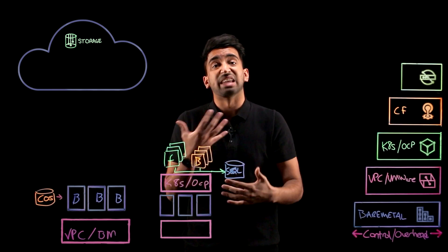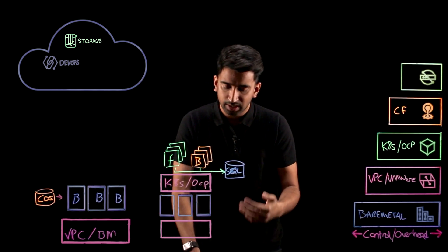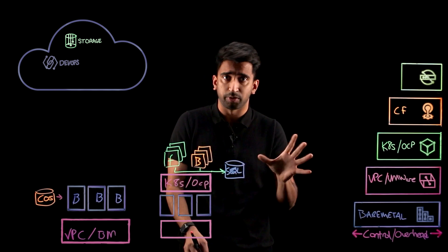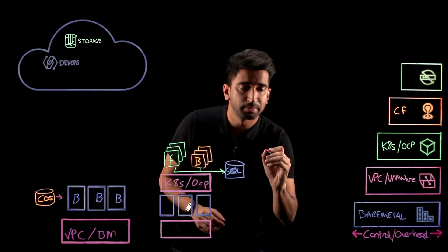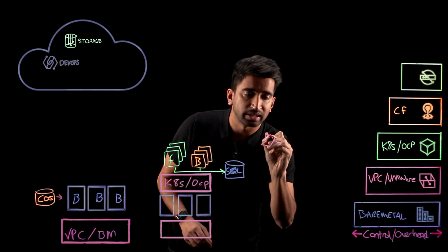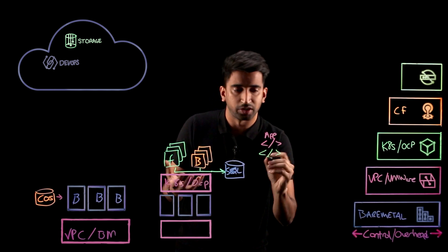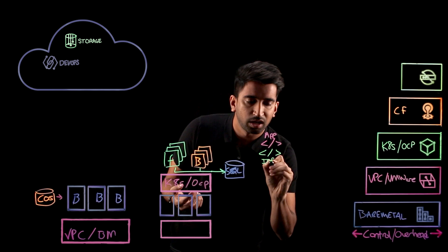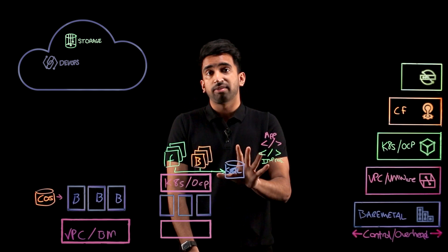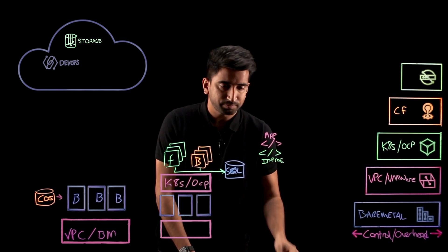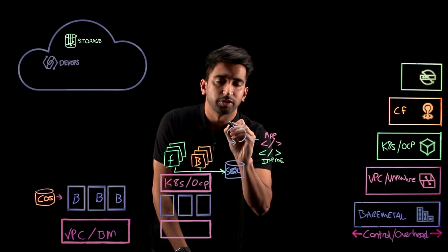Next, let's talk about DevOps and toolchain capabilities, which we'll also take advantage of our public cloud for. Our code is probably split into two different repositories for this particular application — a set of code for the actual containers and applications, and a separate set of code for the actual infrastructure, because we want to manage our infrastructure as code as well. For this, we want to take advantage of some toolchain capabilities.